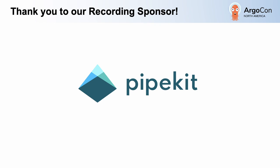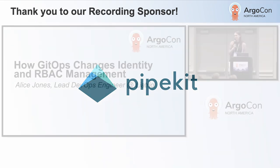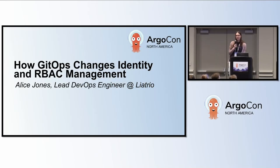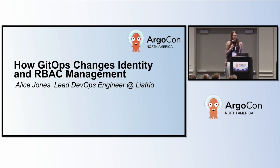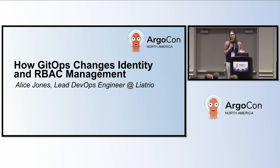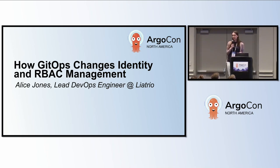I'm Alice Jones. I'm a lead DevOps engineer at Liatrio and also a member of our platform engineering team. I'm going to talk about how GitOps changes identity and RBAC management and how to manage permission boundaries across multiple systems from a platform engineering perspective.